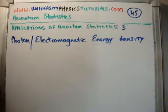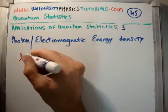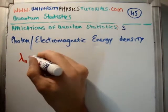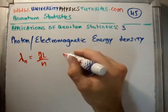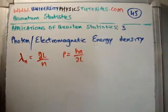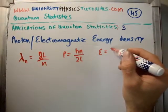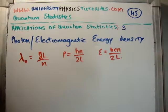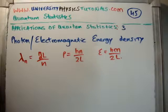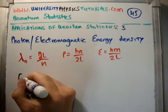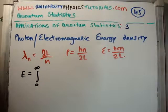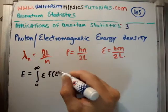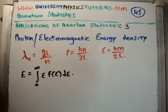In the video on the density of states, we showed that for a photon living in an infinite potential well, the wavelength depends on quantum number N as: lambda = 2L over N, where L is the length of the box. We could also write that p = hN over 2L, and that the energy equals hcN over 2L. So to work out the total energy due to all the photons in all the different modes, the integral we need is: the integral of the energy per mode times the number of particles in that mode, integrated over all energies.